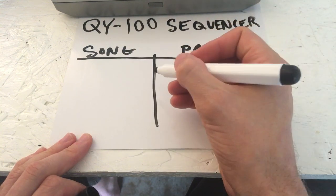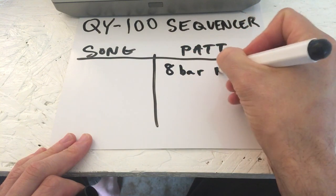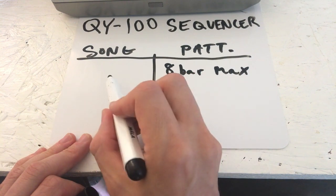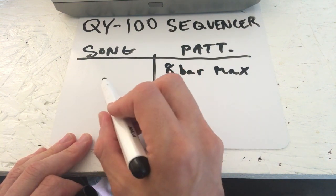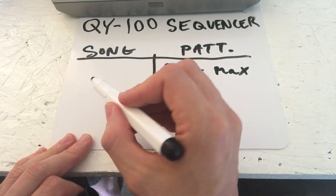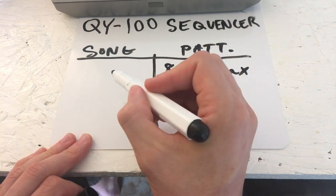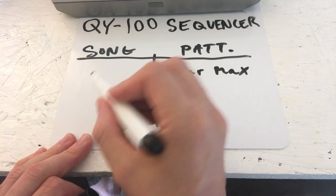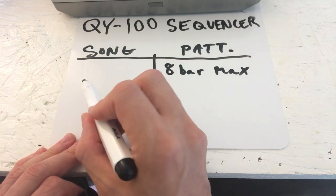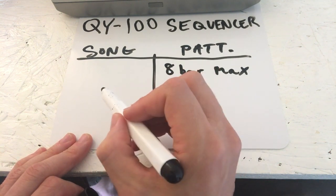When you record in pattern mode, it's an eight-bar max. With song mode it's a linear recorder, just like you would on a tape machine, a digital recorder, or an OP-1 or something like that — except instead of recording audio, it's recording MIDI sequences. You can do pretty long songs; basically you could do one song that fills up the entire memory.